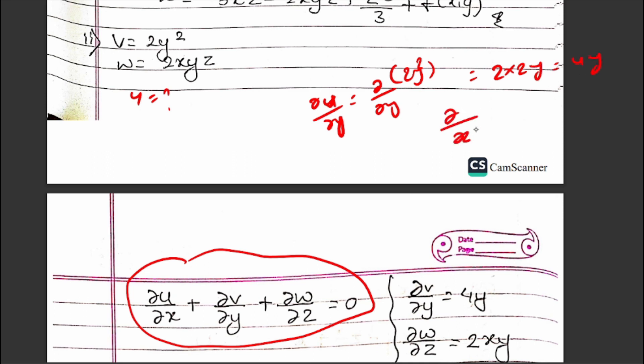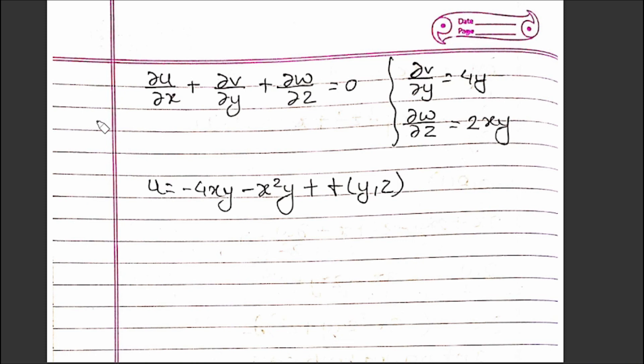∂u/∂y = 4y, and ∂w/∂z = 2xy. Substituting: ∂v/∂x + 4y + 2xy = 0. Therefore ∂v/∂x = -4y - 2xy.